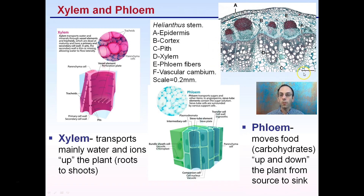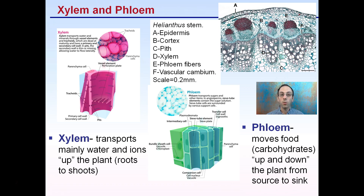Looking at the vascular bundles in the image: D is the xylem — they're a little bit larger, almost like straws. E is the phloem fibers, and because phloem is moving up and down transporting source to sink, we see a lot of smaller cells here involved in a lot more active transport. Xylem is just moving that bulk water — you can think of it like pipes moving through the plant, transporting the bulk of the water from the roots to the shoots.